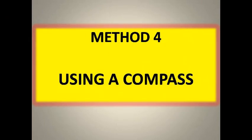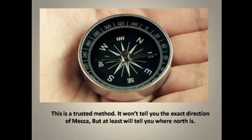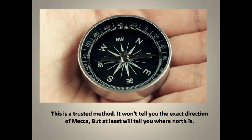Method number 4: using a compass. This is a trusted method. It won't tell you the exact direction of Mecca, but at least it will tell you where north is.